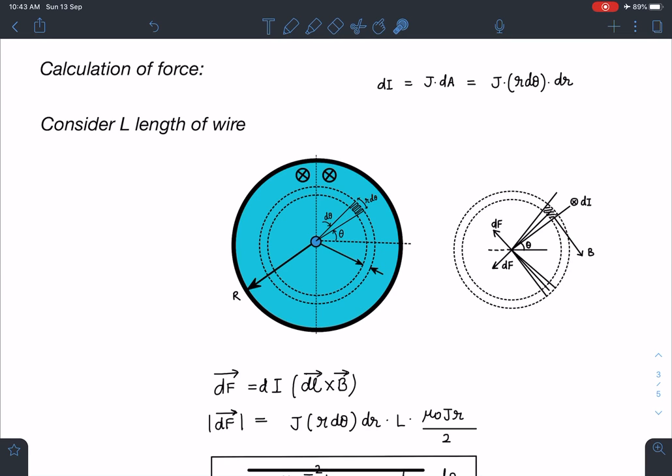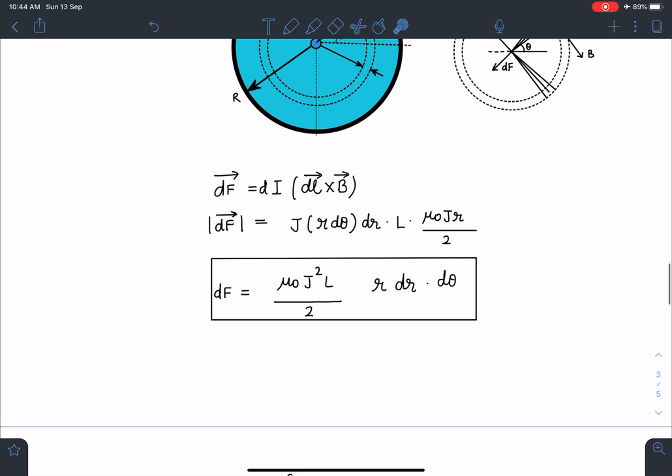So dl is into the plane and B is this side, so dl cross B will be pointing in this direction. Similarly, I will have another element here. Force will be in this direction because here force, here it is in this direction. All right, I think it is clear to everyone. So now I can write this dF is i dl cross B, and if I calculate the magnitude of it, so di is j r dθ into dr.